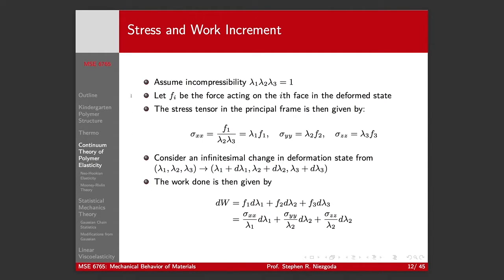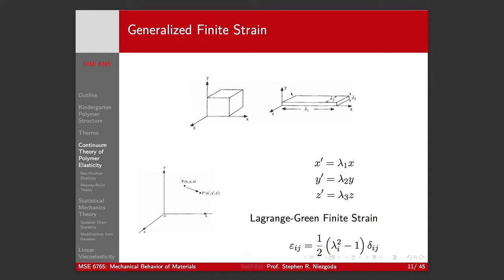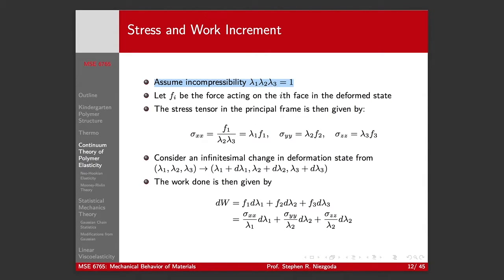So we already said that we basically have a no-volume change. So we're going to assume incompressibility. So lambda one, lambda two, lambda three has to equal one. If we say let fi be the force acting on the i-th face in the deformed state, we can write a stress tensor, which is the force applied to that face by the area. The force on the x face, the area is given by lambda two, lambda three. So force over area. And because of the incompressible condition, we can say that the stress is the stretch ratio times the force. So we have this relationship for our three principal directions.